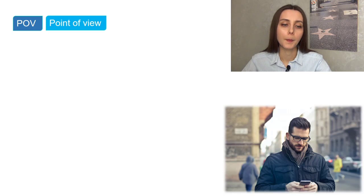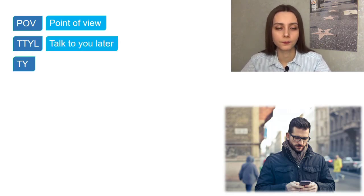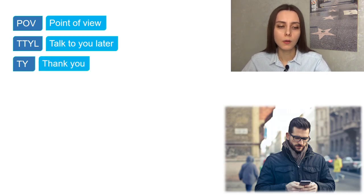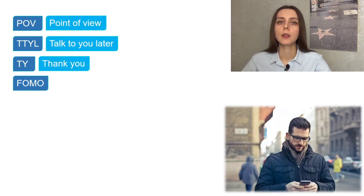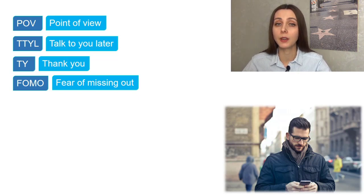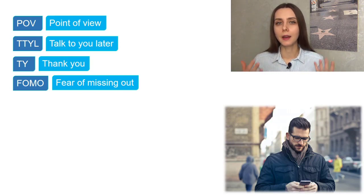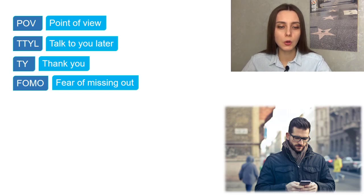POV means 'point of view' — 'What's your POV?' TTYL means 'talk to you later.' TY means 'thank you,' however I wouldn't recommend using this abbreviation if you really want to show appreciation — write 'thank you' as a full word. FOMO — you can also say it aloud as FOMO — means 'fear of missing out.' For example, if you're on Instagram watching photos of friends and you're not there, you might feel like you're missing out, so you have FOMO.